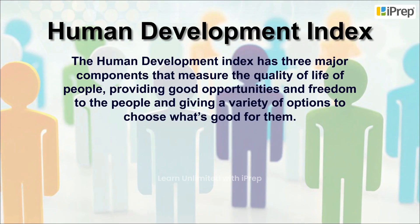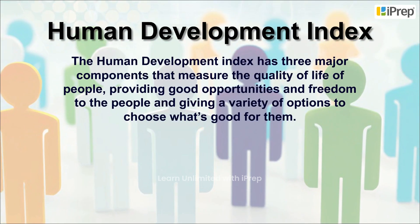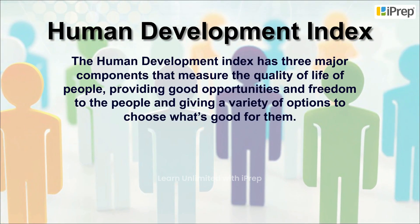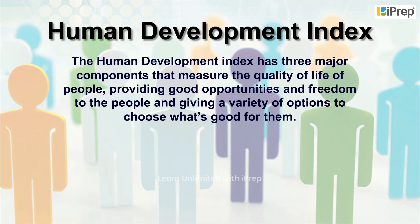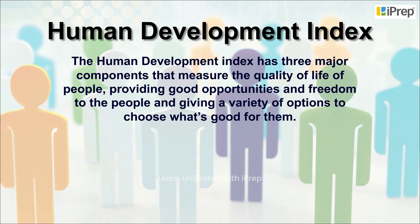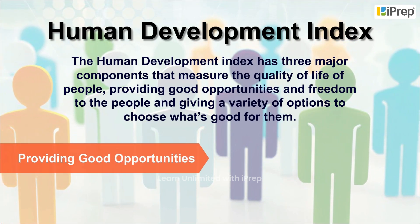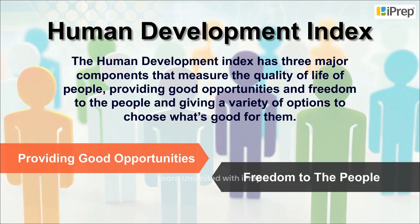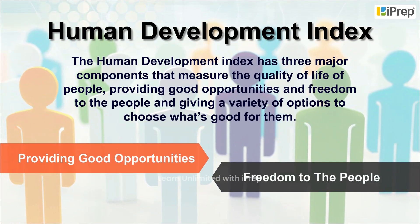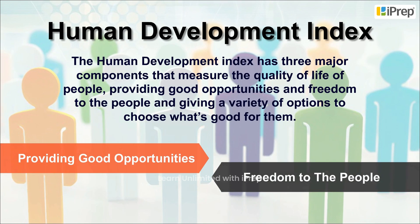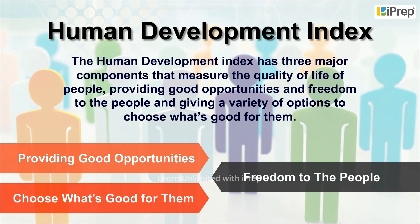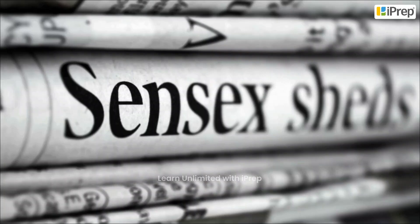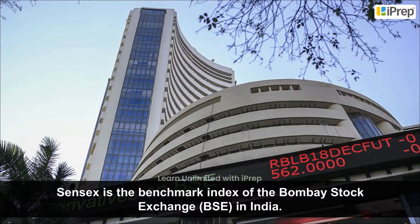The Human Development Index has three major components that measure the quality of life of people: providing good opportunities and freedom to the people, and giving a variety of options to choose what's good for them.